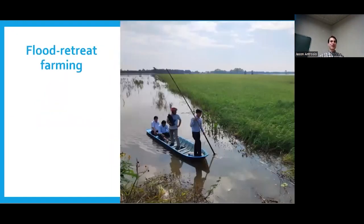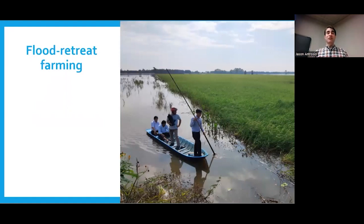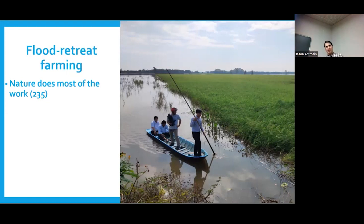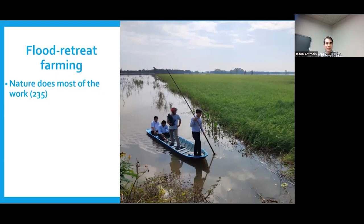One solution to the hard work problem is flood retreat farming. This is a picture from the Mekong Delta, though it's practiced in many different parts of the world. The key advantage is that nature brings the water to you — you don't have to go out with a hose or dig a ditch. You might move water around a little, but it's going to flood anyway, so nature is doing most of the work.